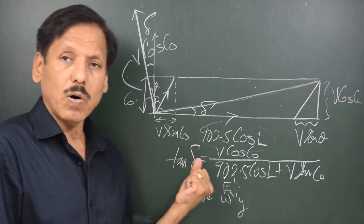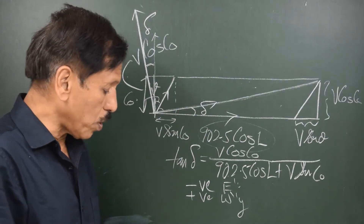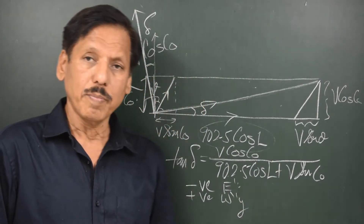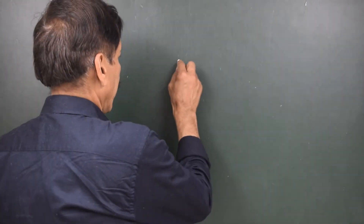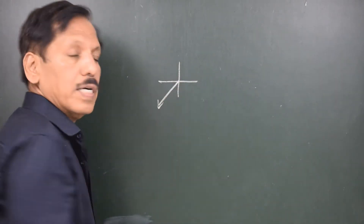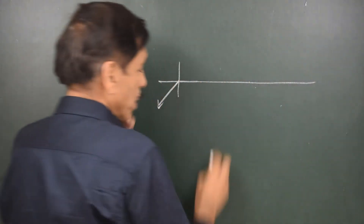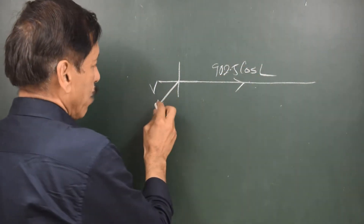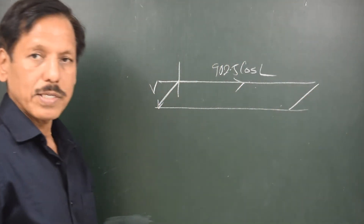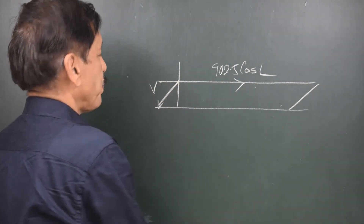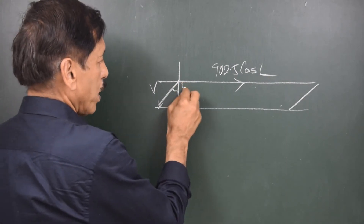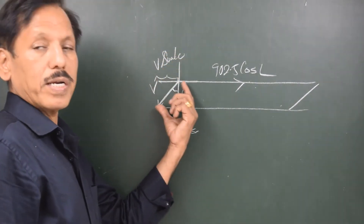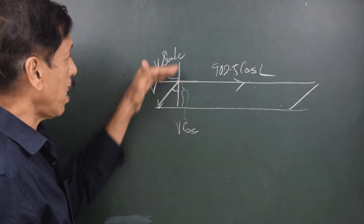Now let's look at the formula when the course is in the south-westerly quadrant. If this side represents the earth's rotational speed 902.5 cos(L) and this is V, completing the parallelogram gives a diagonal in the south-west direction. The ship's speed V can be resolved into two perpendicular components: V cos(course) as the adjacent side and V sin(course) as the other.